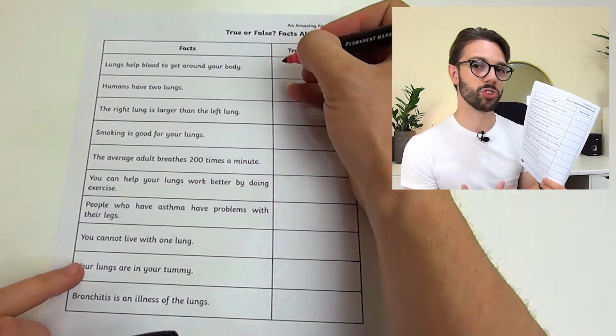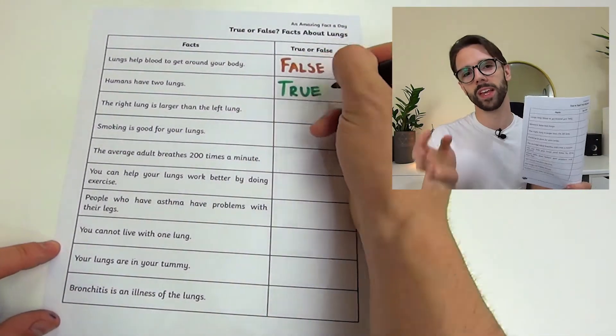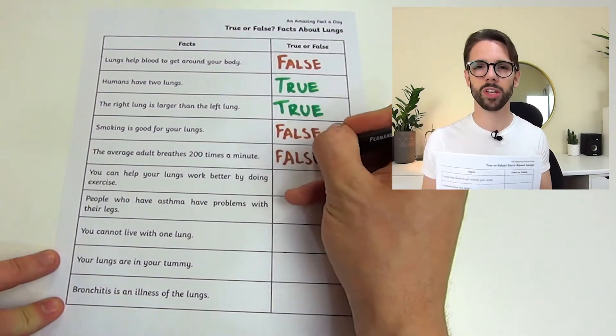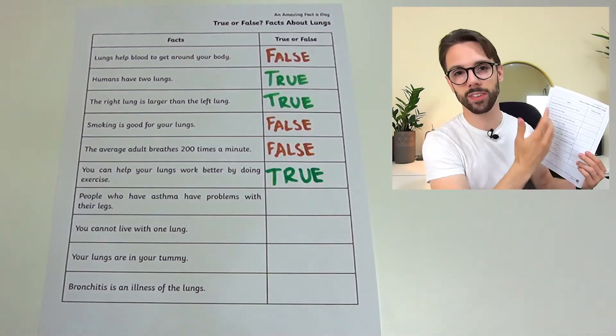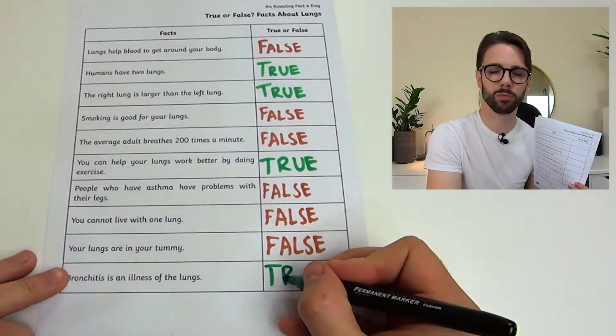To participate, children could individually read the fact and then write true or false based on what they know. If you've got some children in your class that would maybe struggle to read it on their own, you could give it out to the whole class and then you the teacher or a parent could read the fact for them, and then they could write true or false, or even just T and F. You could use this resource at the beginning of your next biology unit on the human body to see what they already know about the human lungs.